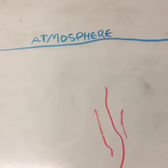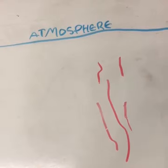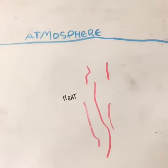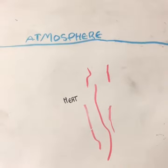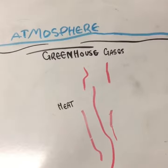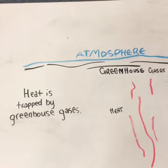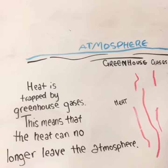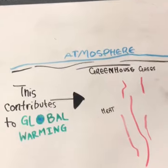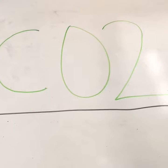When heat rises, it can escape the atmosphere. However, with greenhouse gases, the heat is blocked and cannot exit the atmosphere. So therefore, heat is trapped by the greenhouse gases. This means that the heat can no longer leave the atmosphere and contributes to CO2.